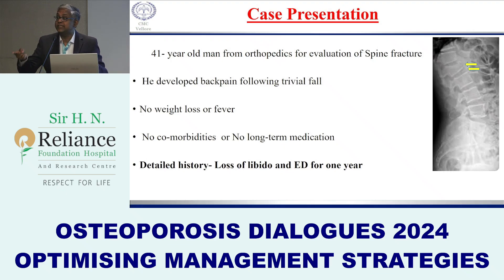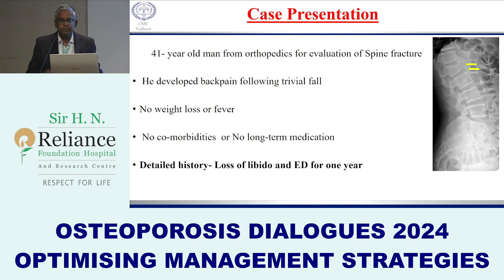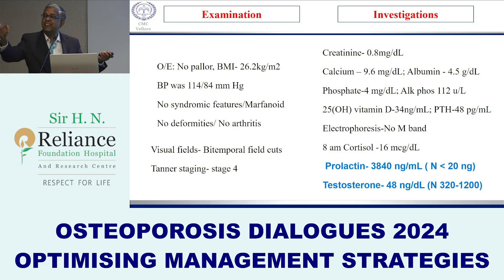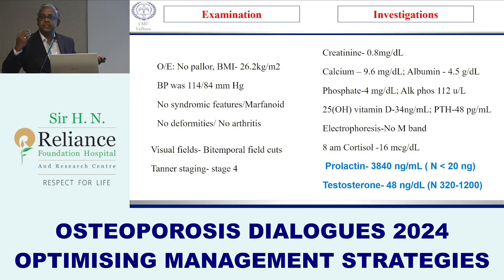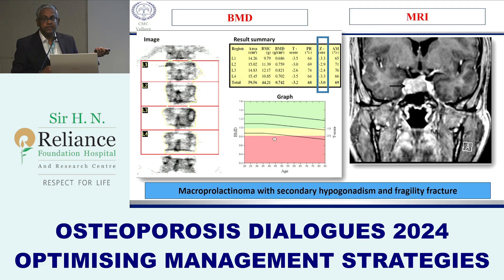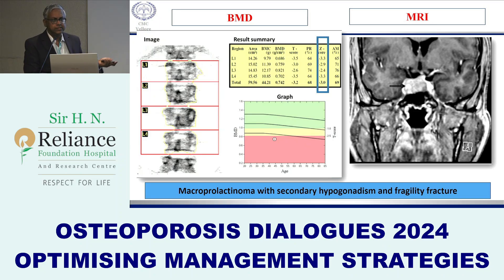Case 1: A male patient with an osteoporosis-related spine fracture from a trivial fall. The resident took a detailed history revealing loss of libido and erectile dysfunction for one year. Examination showed visual field loss and regression of secondary sexual characteristics. Prolactin was very high and testosterone was low — hypogonadism secondary to hyperprolactinemia. DEXA showed a Z-score less than minus 2, and imaging revealed a pituitary macroadenoma. Treating the prolactinoma resolved the underlying cause.